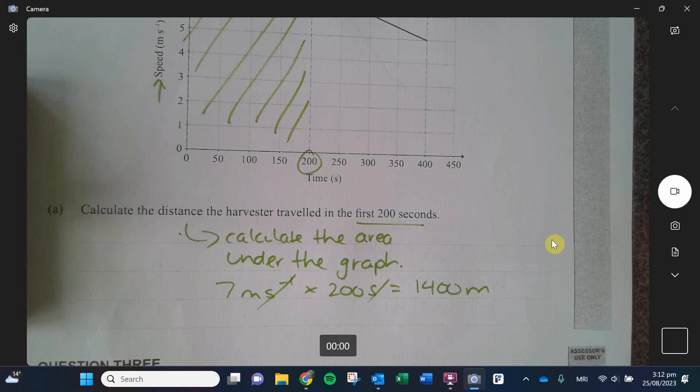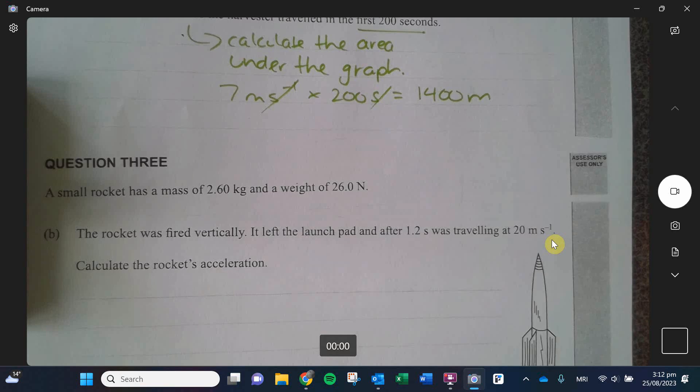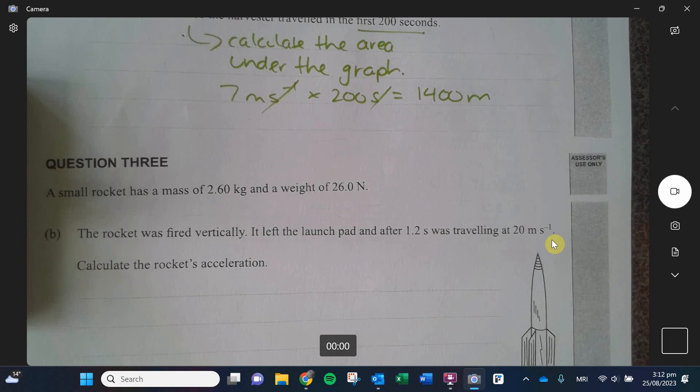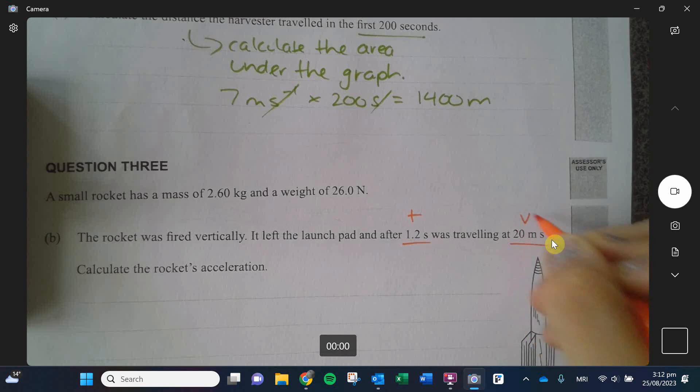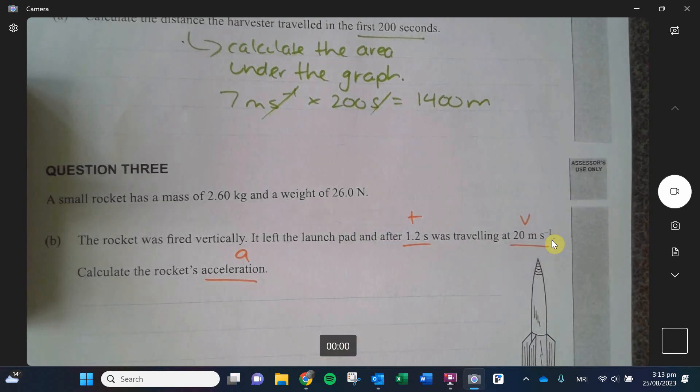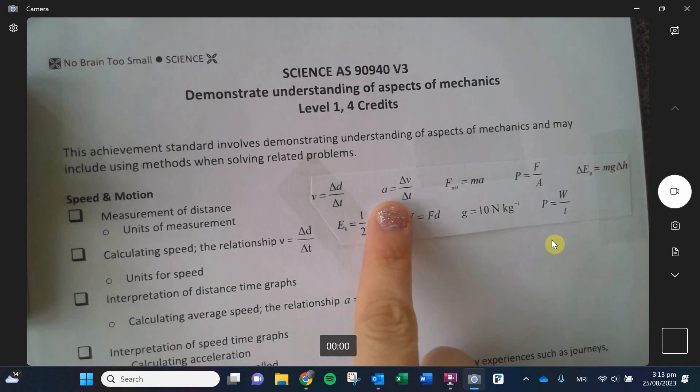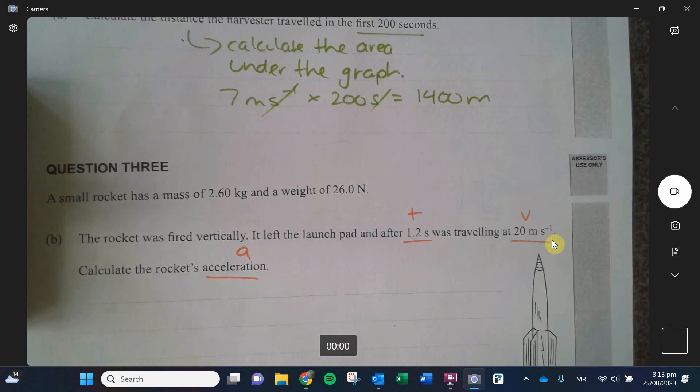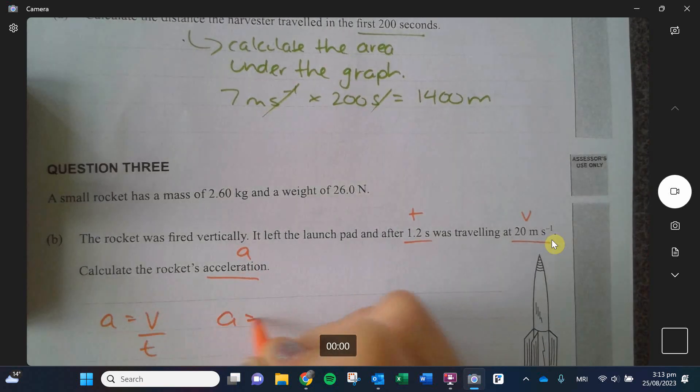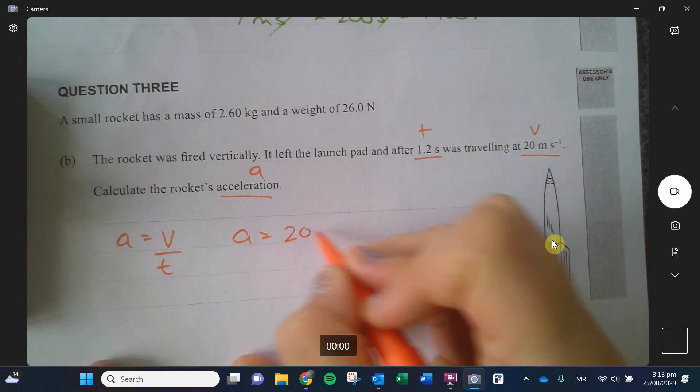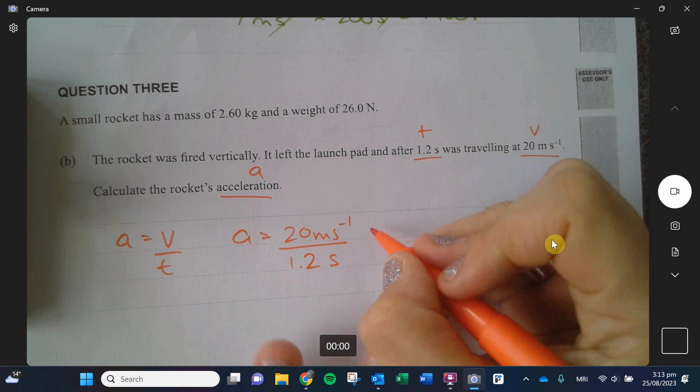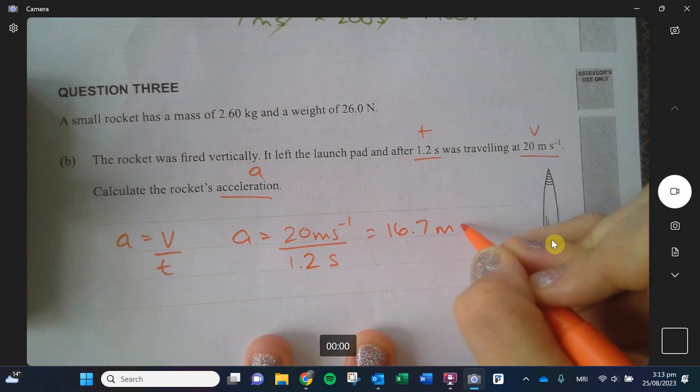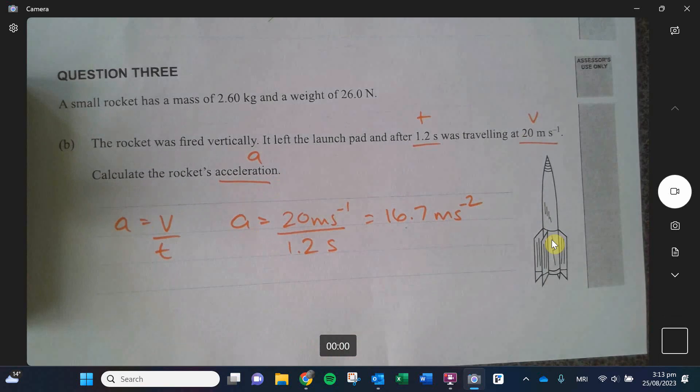That one, unfortunately, was only at achieved level. And same with the last one. I'll just quickly do the last one. This one here is talking about a rocket. It's fired vertically. It has a launch pad. It was traveling for two seconds. So that's my time. And it was traveling at 20 meters per second. That is my velocity. They want you to calculate acceleration. So again, look at our resource sheet. Acceleration is change in velocity divided by change in time. So a equals v over t. A equals 20 meters per second divided by 1.2 seconds. So I would do 20 divided by 1.2. And that would be 16.7 meters per second squared in this case is the unit for acceleration. This one, unfortunately, was only achieved.